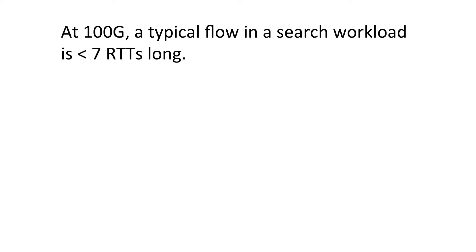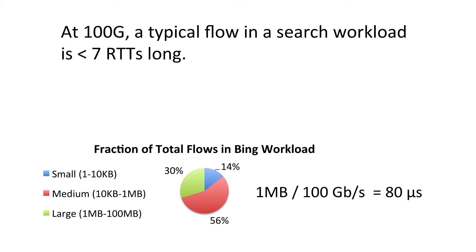Today's typical link speeds are 10 or 40 gigabits per second. But if we move to 100 gigabits per second, a typical flow in a search workload will only last seven RTTs, and in that case we can't wait 30 round trip times for the schemes to figure out the rates. Here I have the flow size distribution for a search workload. A typical one megabyte flow at 100 gigabits per second would finish in just 80 microseconds, which is seven to eight round trip times in today's data centers. So reactive schemes are slow for 100 gigabits per second.